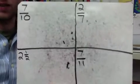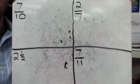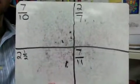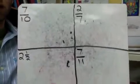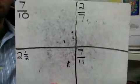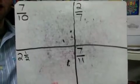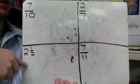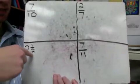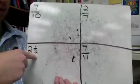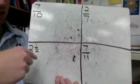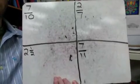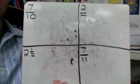Here are four practice problems for you to do on your own. One of them is repeating, one is terminating, one just keeps going without really repeating, and one is a mixed number. For the mixed number, you can keep it as is and figure out the decimal for the fraction part, then put the whole number in front — or you can convert to an improper fraction. Take some time to do these and come back to the video to check how you did.